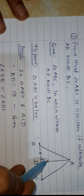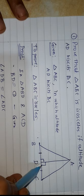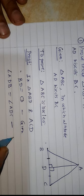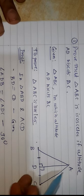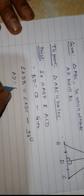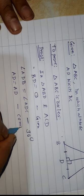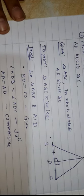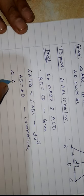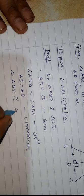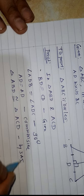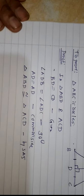Third thing is AD — this is the common side. So with the help of these three things — 1, 2, 3 — we can say triangle ABD is congruent to triangle ACD by SAS, side-angle-side criteria. These two triangles are congruent.